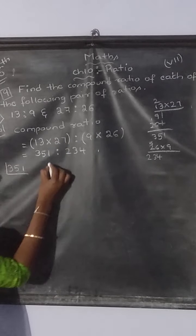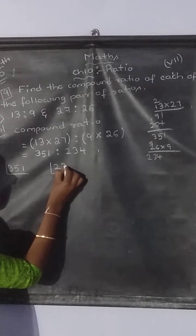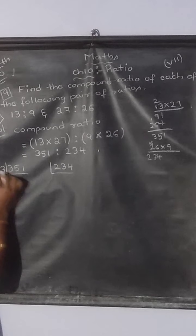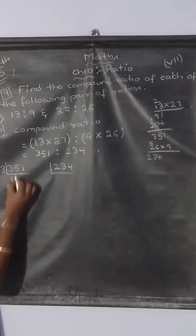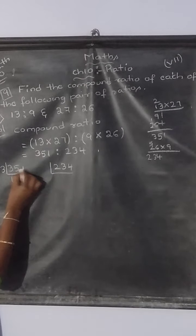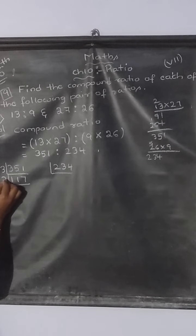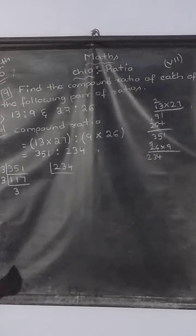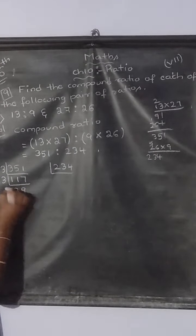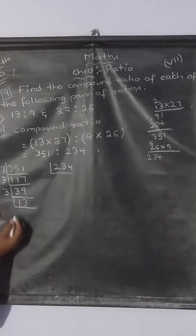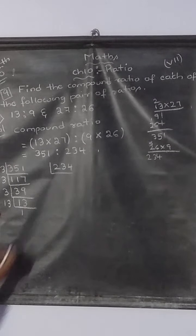So 351, 234 - simplify both now. See, 1 in the unit place, so it will not be divisible by 2. Try with 3. Yes. 3 times 1 is 3, 3 times 1 is 3, 2 remainder. 21, it will become 3 times 7 is 21. Again, it may come in 3. 3 times 3 is 9, 10, 11. So it will become 27. 3 times 9 is 27. Again, it will come in 3. 3 times 1 is 3, 3 times 3 is 9. 13 - it is actually a prime number, so it will come in only 13 times 1 is 13.